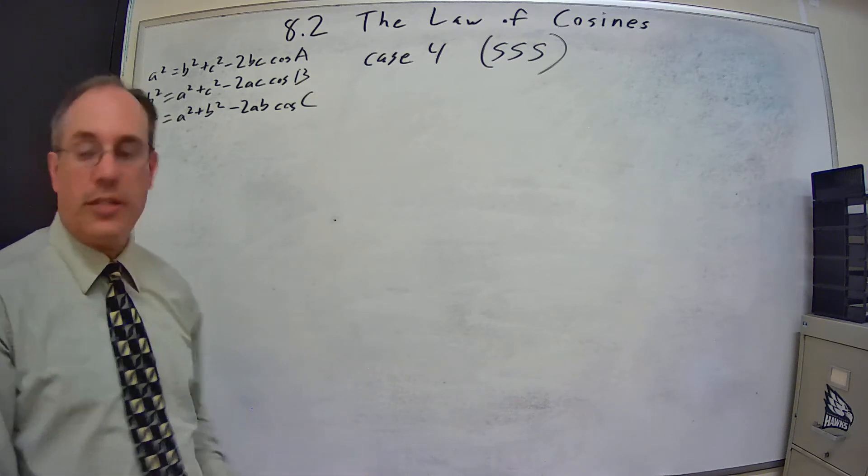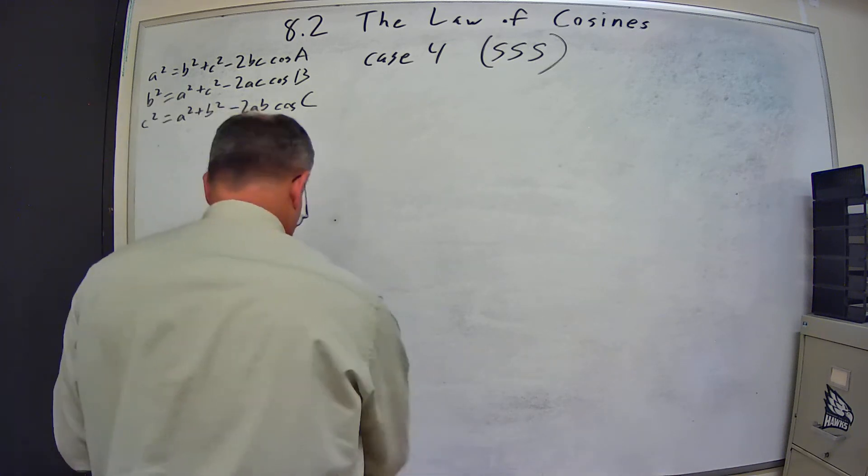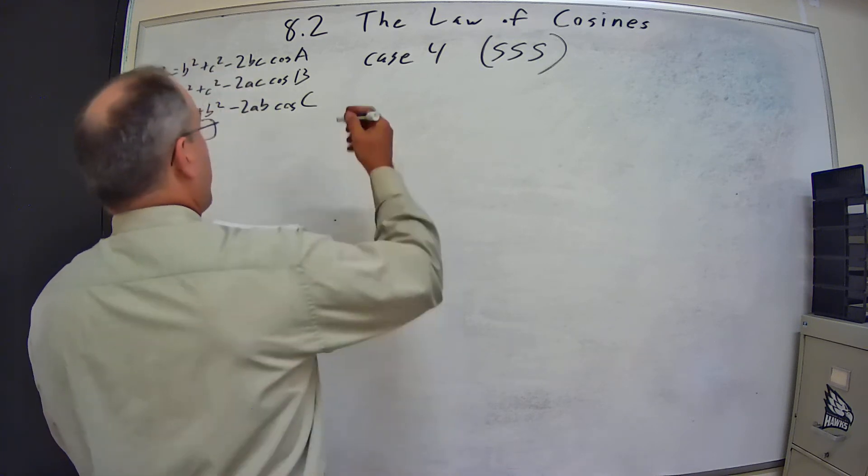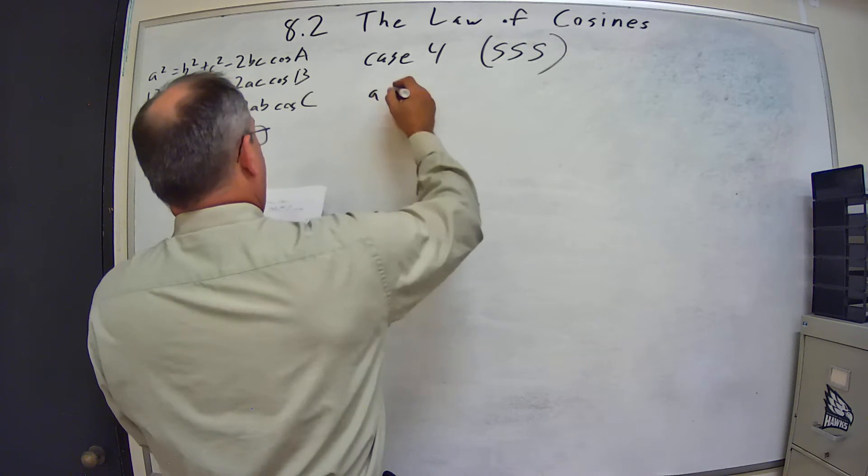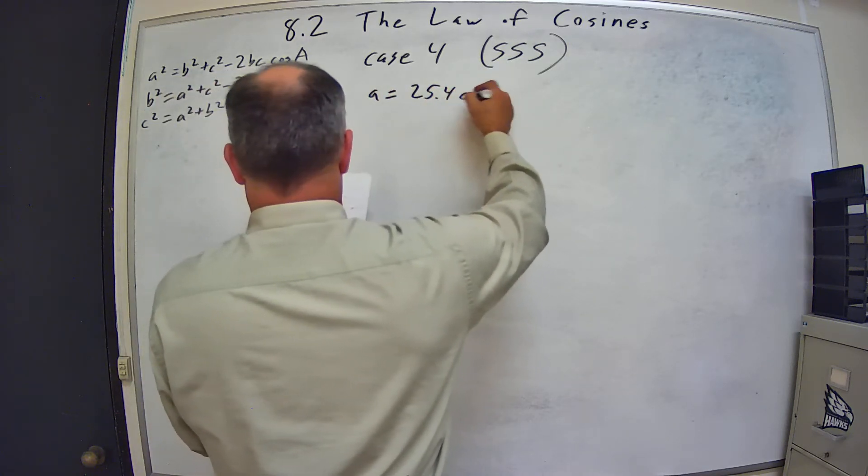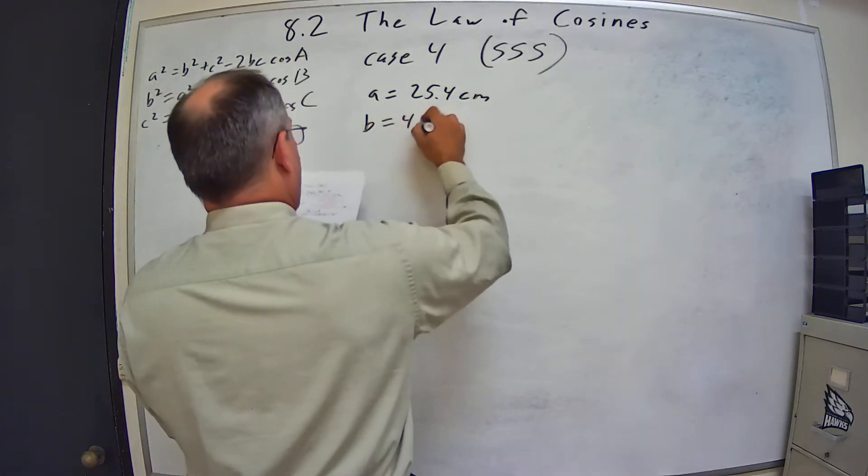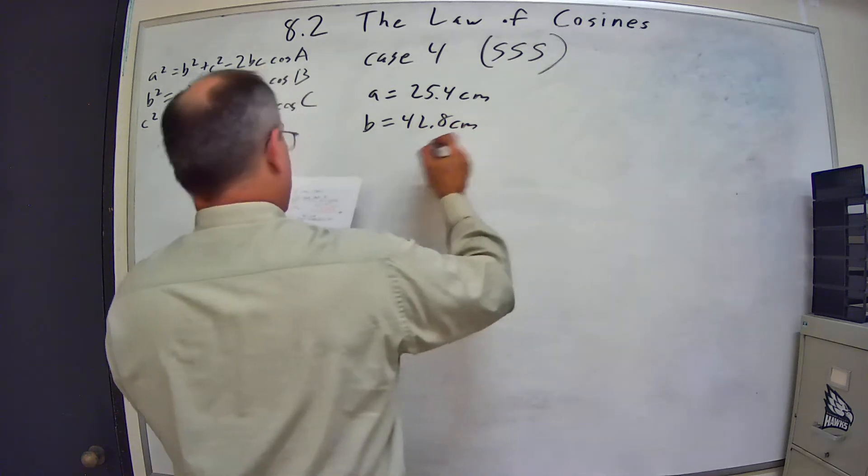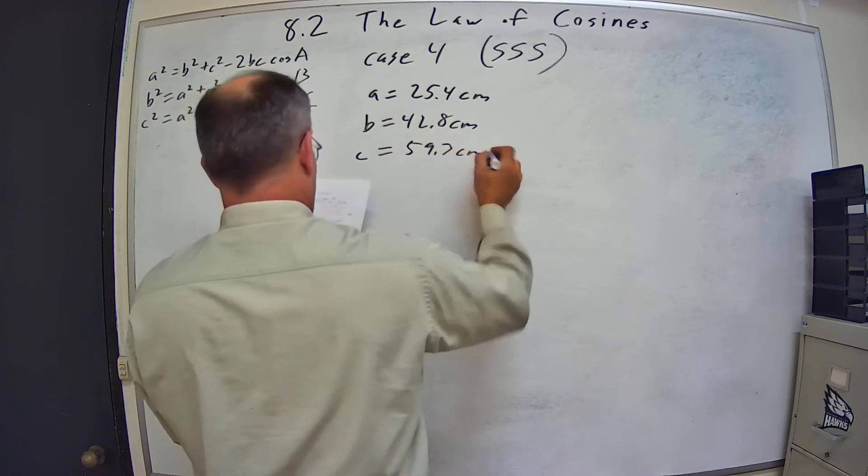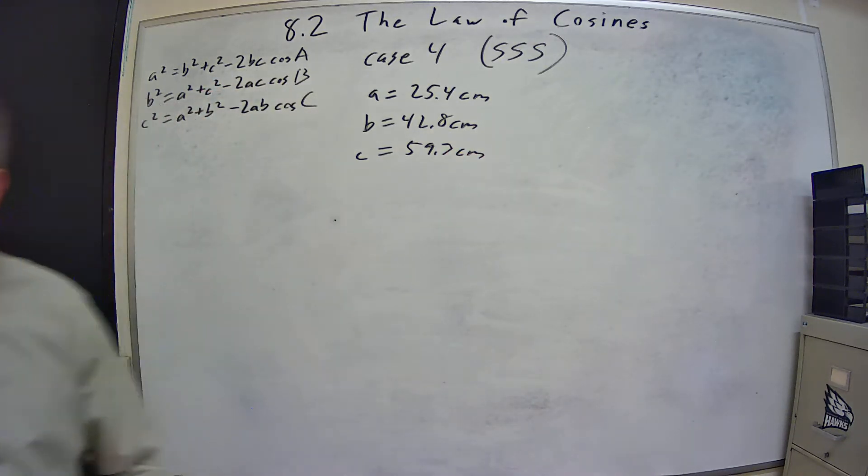So let's do an example. Side A is equal to 25.4 centimeters. Side B is equal to 42.8 centimeters. And side C is equal to 59.3 centimeters. And we want to solve this triangle.